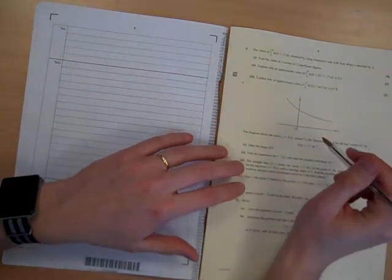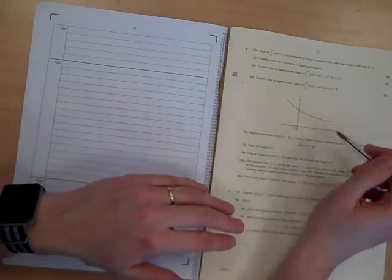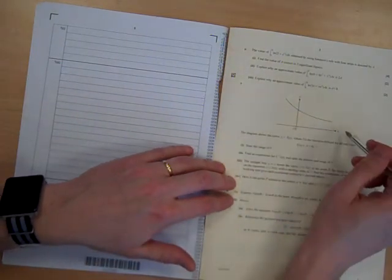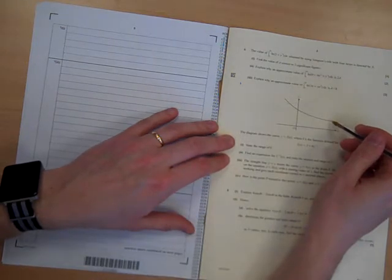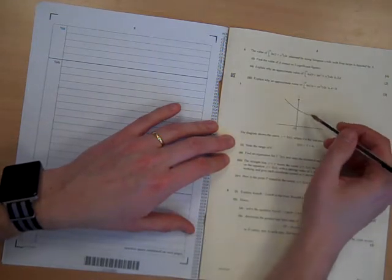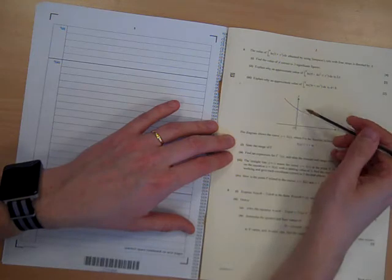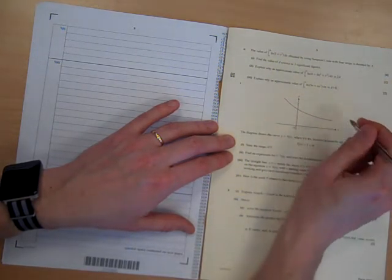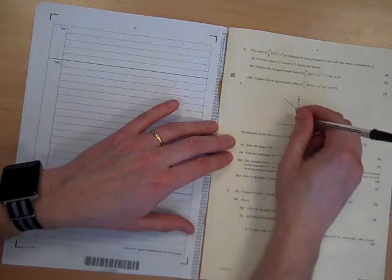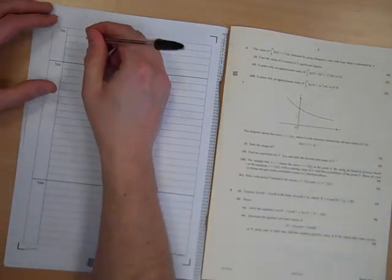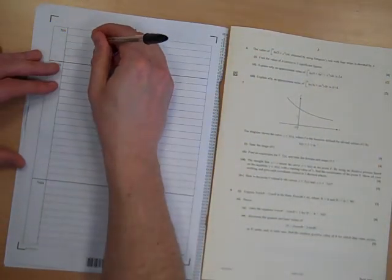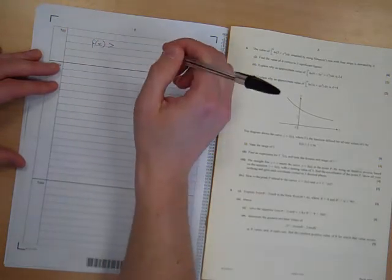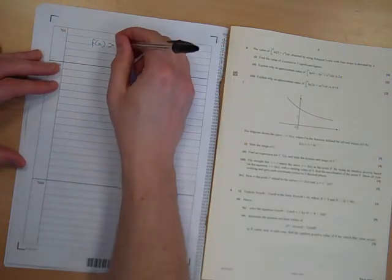Well, hang on. We know that an e to the x graph has an asymptote at the x-axis. This is an e to the x graph that is stretched by 4 units and then lifted up. So this line here, that's the asymptote, drawing it too high, but that line there must be 3. So the range of this, we must write it in terms of Y or f of x. f of x is greater than 3, or y is greater than 3. One mark.